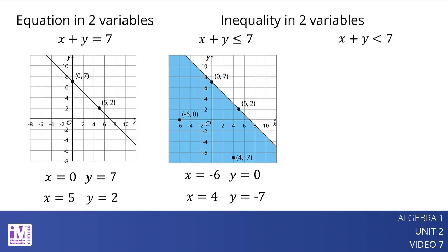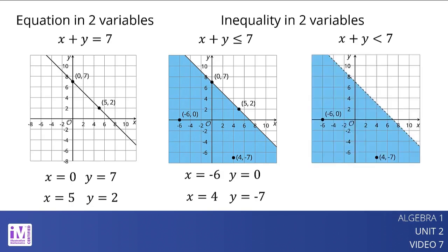On a coordinate plane, the solution does not include the points on the line that represent x plus y equals 7. To exclude points on that boundary line, we can use a dashed line. All points below that line are x comma y pairs that make x plus y is less than 7 true. The region on that side of the line can be shaded to show that it contains the solutions.